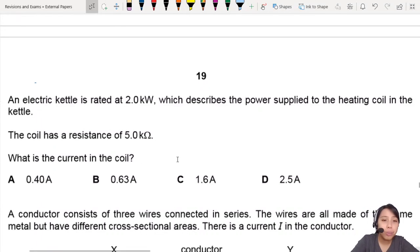Now we're looking at the electric kettle, rated at 2 kilowatts. Now when you see the word watt, you should think of what is the quantity? Power, and they told you power supplied to the heating coil.